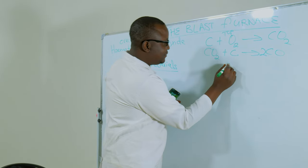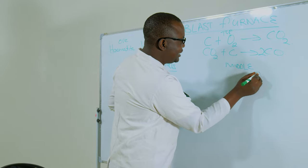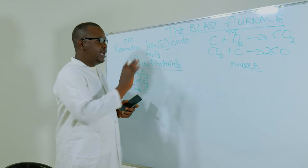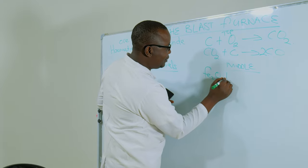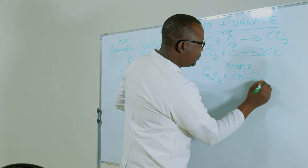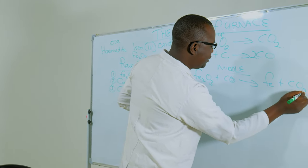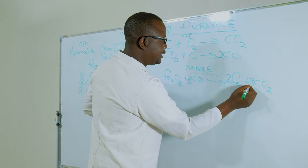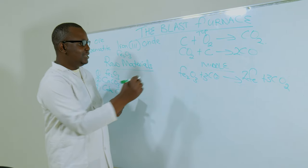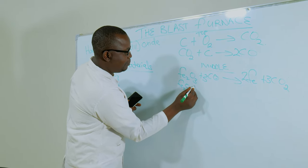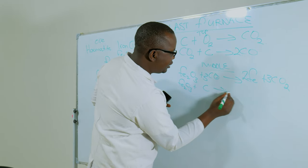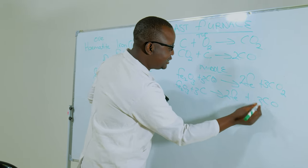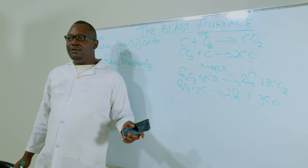At the middle of the blast furnace, the following reactions take place. The first reaction is the indirect reduction of iron ore by carbon monoxide: Fe2O3 + CO produces iron plus carbon dioxide — balanced as 3, 2, 3. We also have another reaction where hematite is reduced by carbon to produce iron plus carbon monoxide, again a 3, 2, 3 reaction.